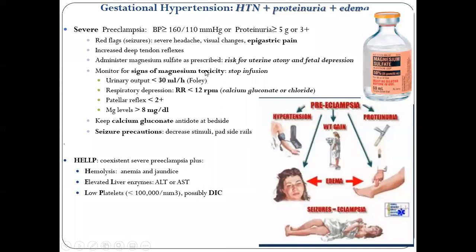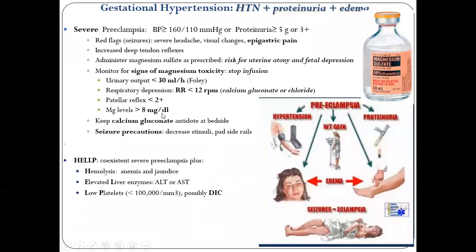If magnesium toxicity is seen, the first priority is to stop the magnesium infusion. Signs of magnesium toxicity: urine output less than 30 mL per hour, respiratory rate less than 12, deep tendon reflexes less than 2+, magnesium level more than 8 mg/dL. If you see any one of these, stop the magnesium infusion. The antidote for magnesium sulfate is calcium gluconate — important for NCLEX. Also decrease stimuli and pad the side rails.